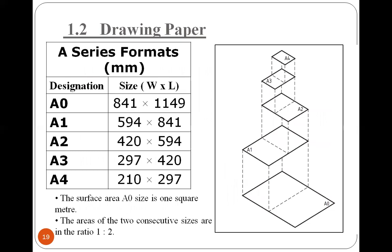Drawing papers: The designation of drawing sheets ranges from A0 to A4 as shown in the table. A0 is 841 by 1189 mm, A1 is 594 by 841, A2 is 420 by 594, A3 is 297 by 420, and A4 is 210 by 297. All dimensions are in millimeters. A0 has the largest size, and as we go to A1, A2, A3, the size decreases. A4 size sheets are generally used for general-purpose papers or photocopies. The areas of two consecutive sizes are in the ratio of 1 to 2.